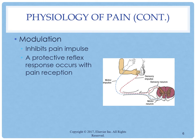A protective reflex response also occurs with pain reception. Motor impulses travel via a reflex arc along motor nerve fibers back to a peripheral muscle near the site of stimulation, bypassing the brain. Contraction of the muscle leads to a protective withdrawal from the source of pain. Pain processes require an intact nervous system and spinal cord. Common factors that disrupt the pain process include trauma, drugs, tumor growth, and metabolic disorders.